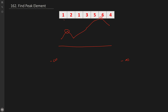We start comparing two adjacent elements at a time. Running a for loop with index i, we compare nums[i] and nums[i+1]. For index i, we already know the left side has negative infinity. So we check: if nums[i] is greater than nums[i+1], that means we've found the peak element and we return i as the answer.